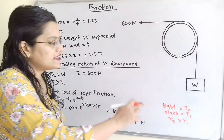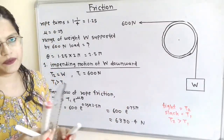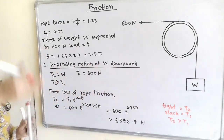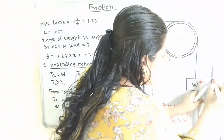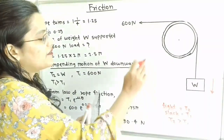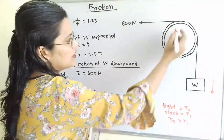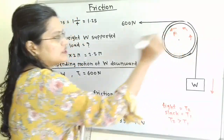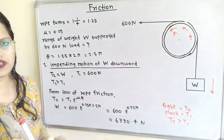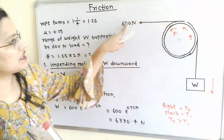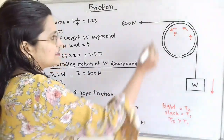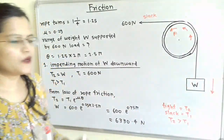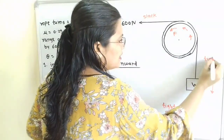How do we decide the tight side and slack side? It depends on the motion of weight W. In the first condition, the impending motion of weight W is in the downward direction. The frictional force will be developed in the opposite direction of motion. This frictional force acts in the same direction as the 600 N force, so the rope connected to the 600 N force is the slack side, and the rope connected to weight W is the tight side.